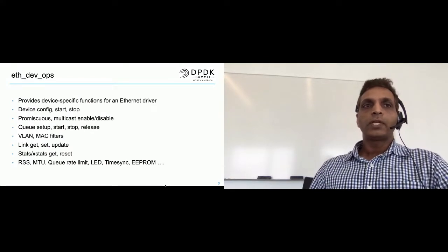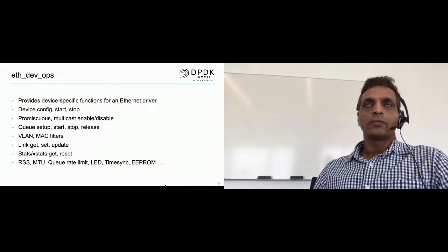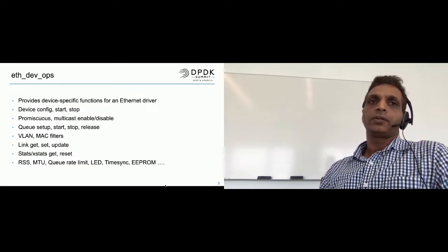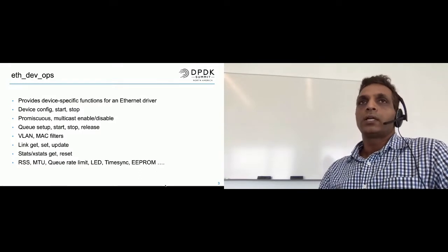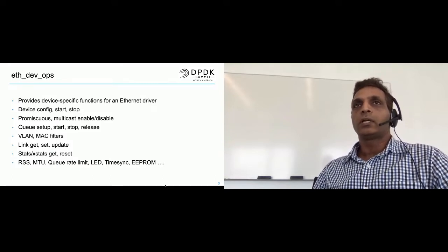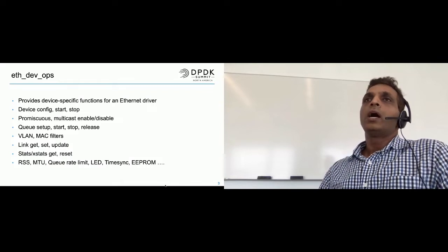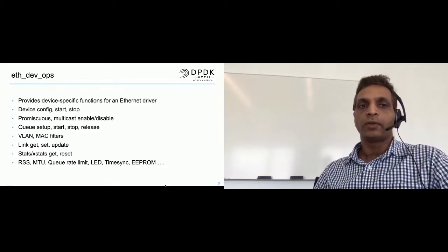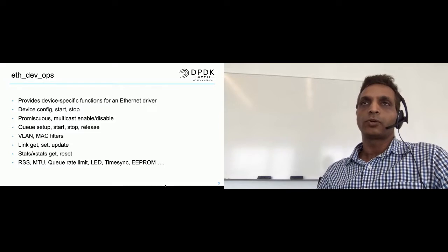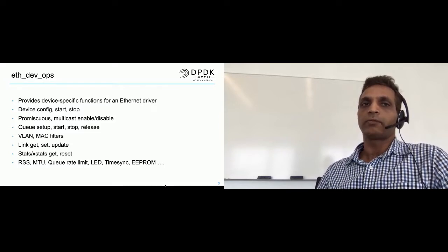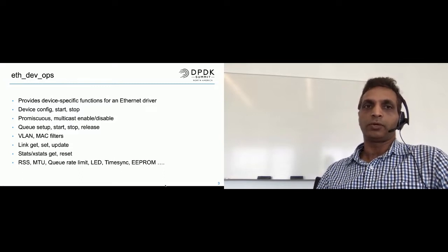DPDK has been around for a long time. We started with a set of APIs which allow a poll mode driver to perform device-specific operations — start, stop, and configure the device. It allows us to enable promiscuous mode, multicast, disable it if necessary. It gives us functions to set up TX and RX queues, create MAC and VLAN filters, link-related information, stats, RSS, MTU. This has been serving the purpose for NetApp-related poll mode drivers for a while now.